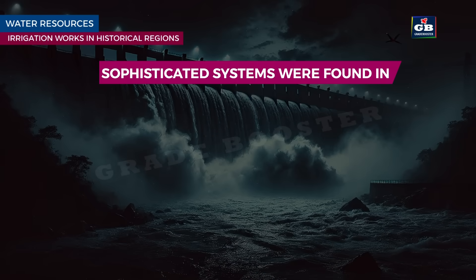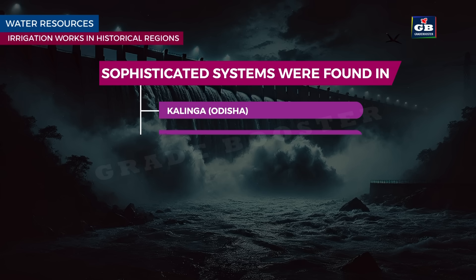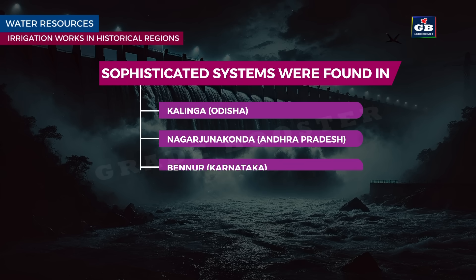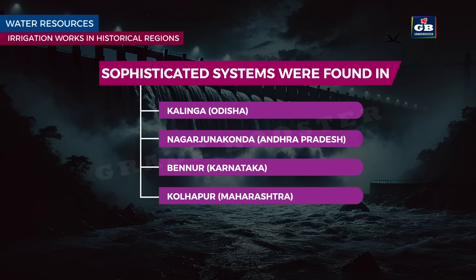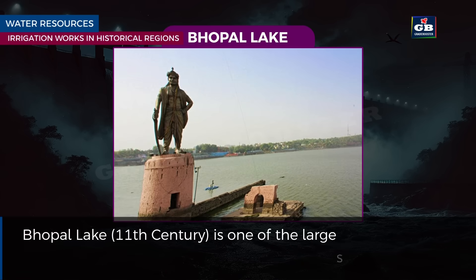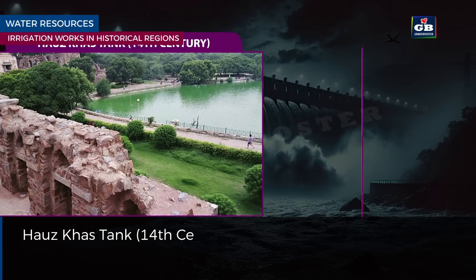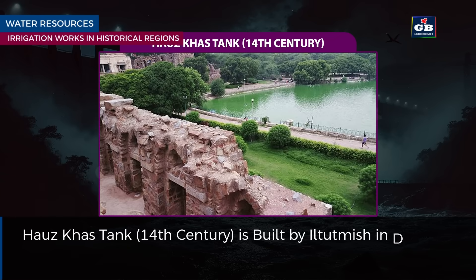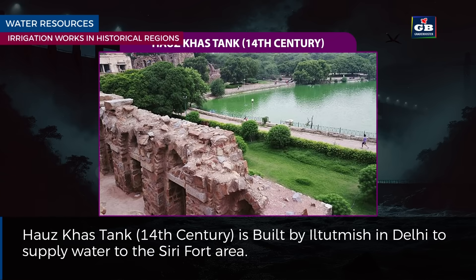Sophisticated irrigation systems were found in Kalinga (Odisha), Nagarjunakonda in Andhra Pradesh, Benur in Karnataka, and Kolhapur in Maharashtra. Bhopal Lake, dating to the 11th century, is one of the largest artificial lakes of its time. Hauz-i-Khas tank, built in the 14th century by Iltutmish in Delhi, was constructed to supply water to the Siri fort area.